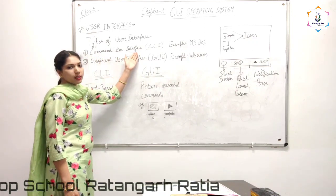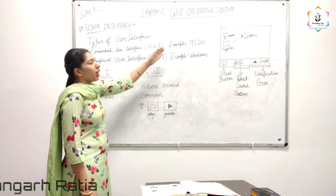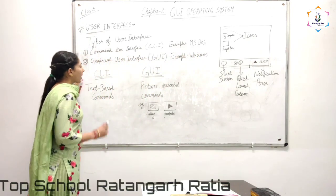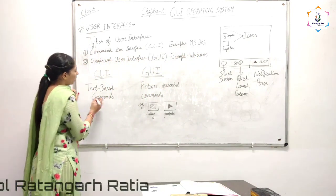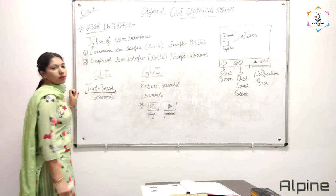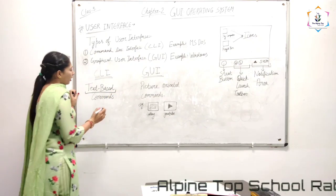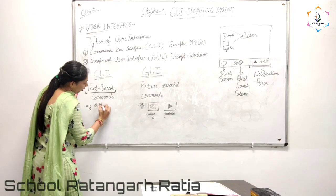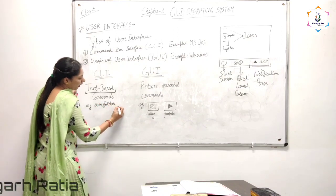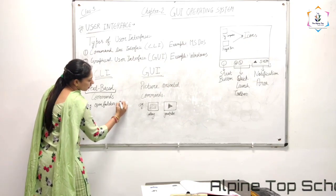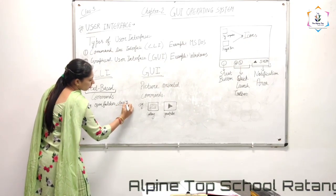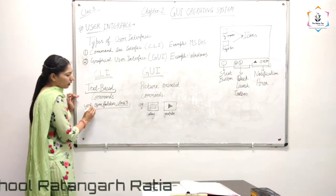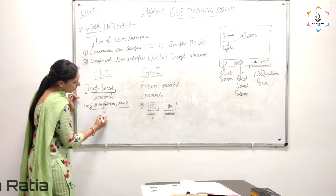First is Command Line Interface, that is CLI. The example of CLI is MS-DOS. In command line interface, we give commands to the computer with the help of the keyboard. For example, to open a folder named 'Class 3', we would type the open folder command and the folder name, and only then our folder will open.